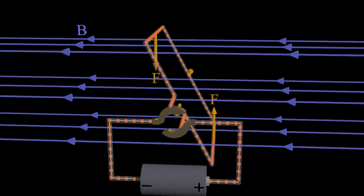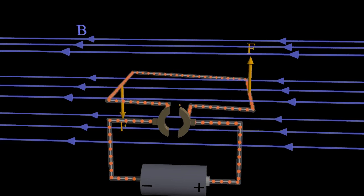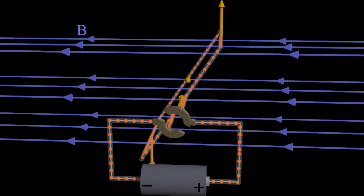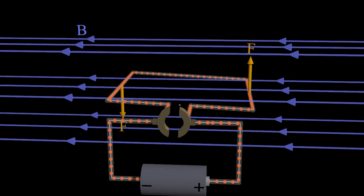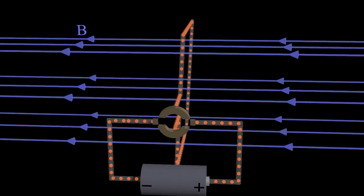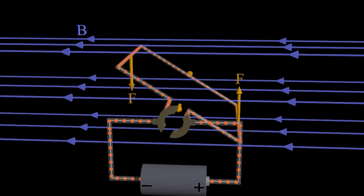The battery that drives this motor produces a constant voltage which can only drive the current in one direction. However, the motor loop would get stuck lined up perpendicular to the magnetic field if its current never changed direction.